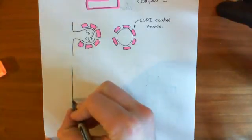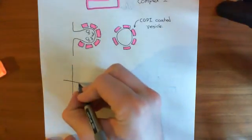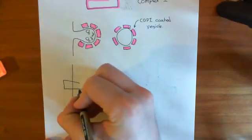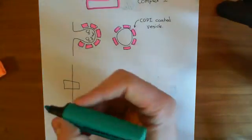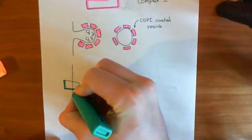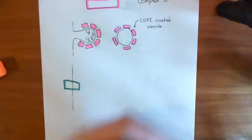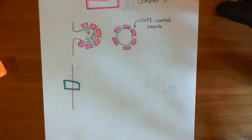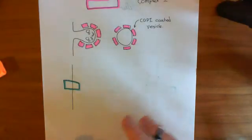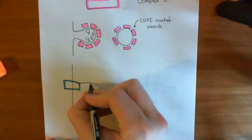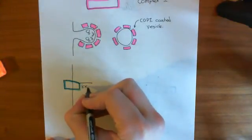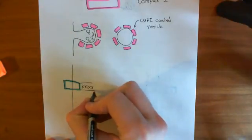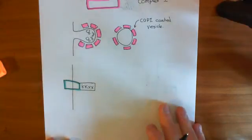Let's say we've got a membrane here and we have some membrane-bound protein here. This protein needs to be transported back from the Golgi apparatus to the ER. So how do you signal that it needs to be moved back? Well, it will have a signalling sequence as well, and this signalling sequence is the KKXX sequence — KKXX is how we write the signalling sequence for membrane proteins.